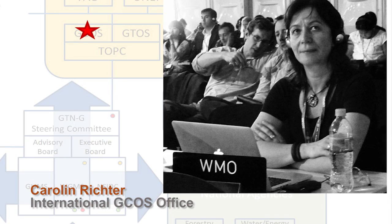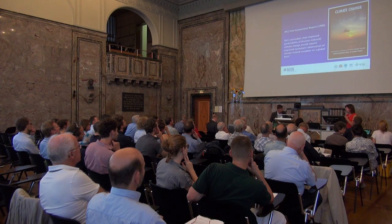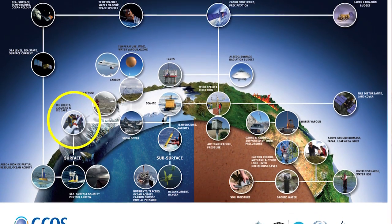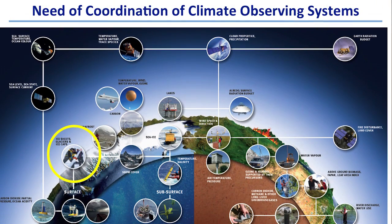GCOS stands for the Global Climate Observing System. It is a system co-sponsored by United Nations agencies. There is an international United Nations effort that the glacier monitoring system is very much linked to, ensuring that all of this work is being noticed, assessed and reported to higher levels.